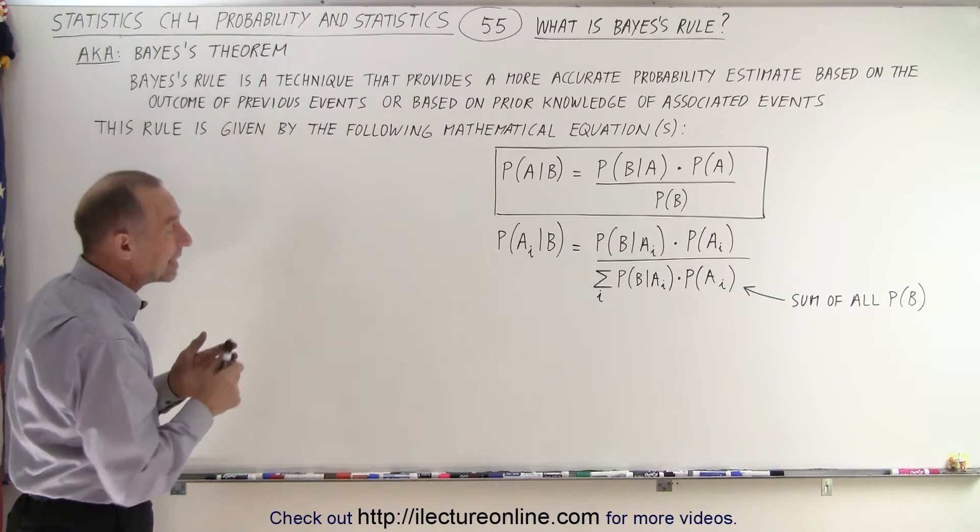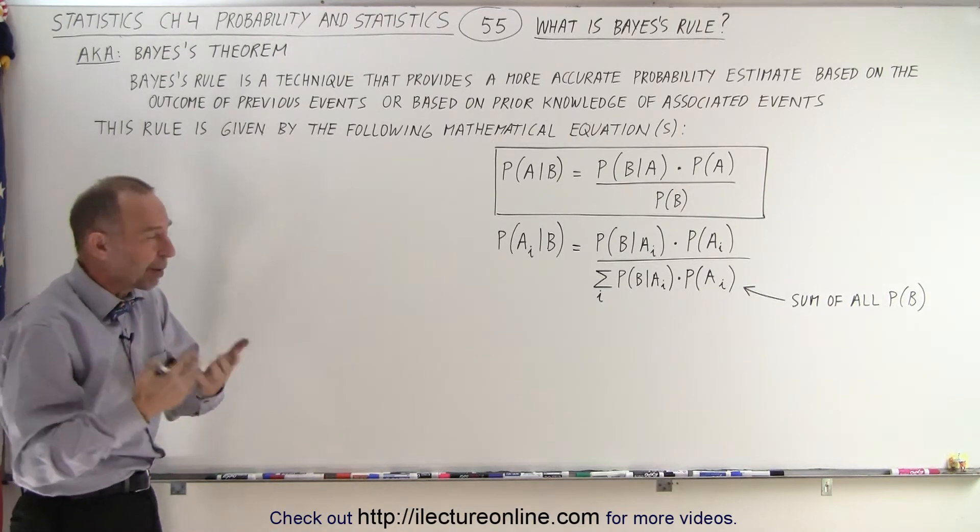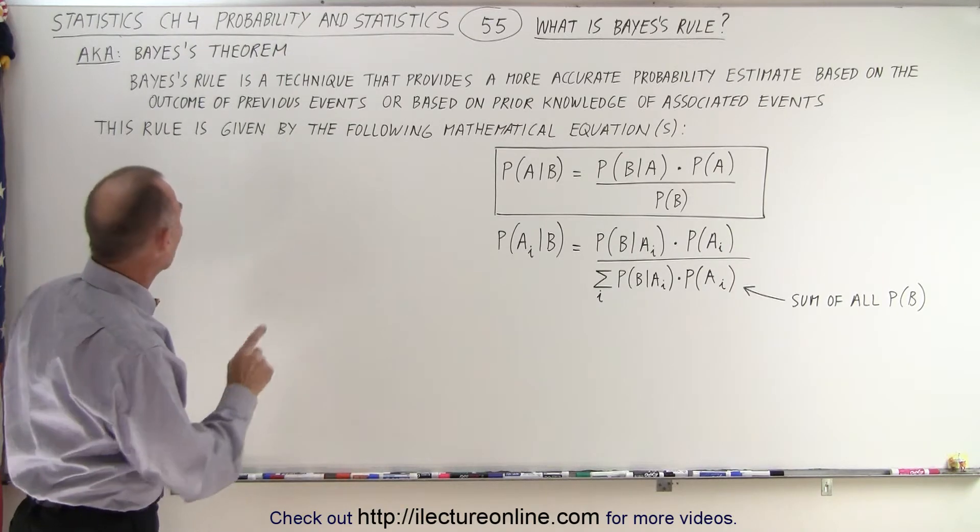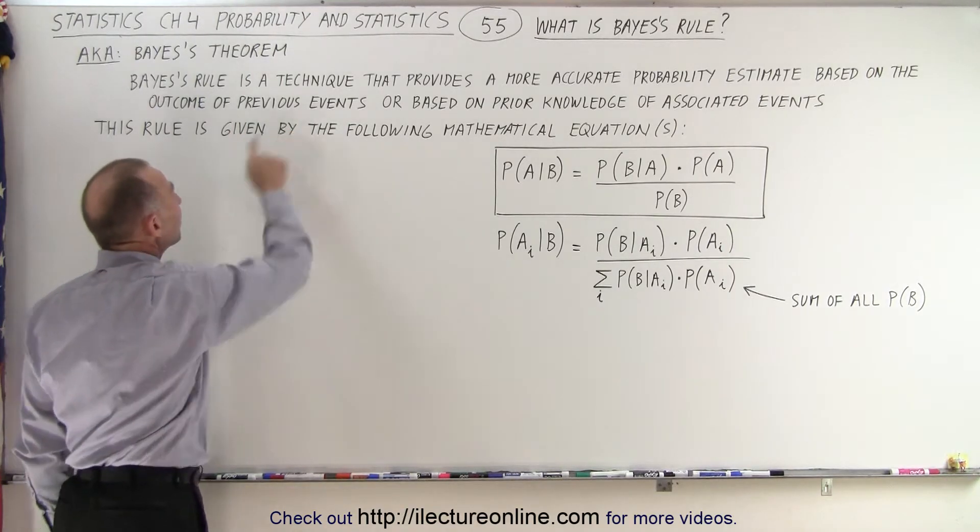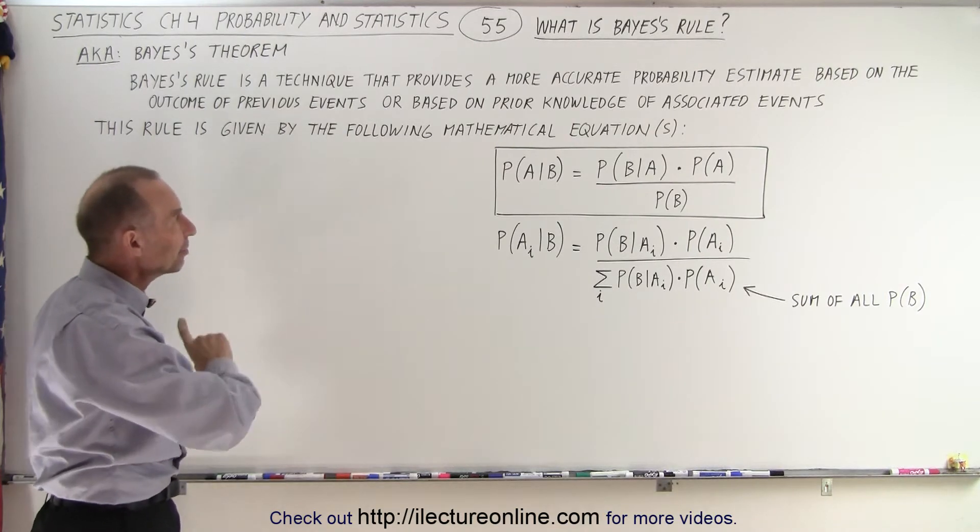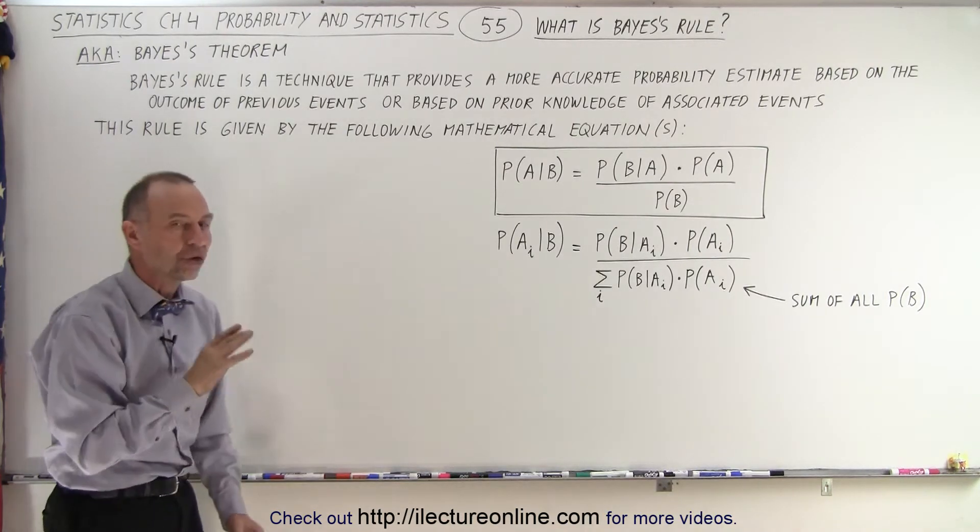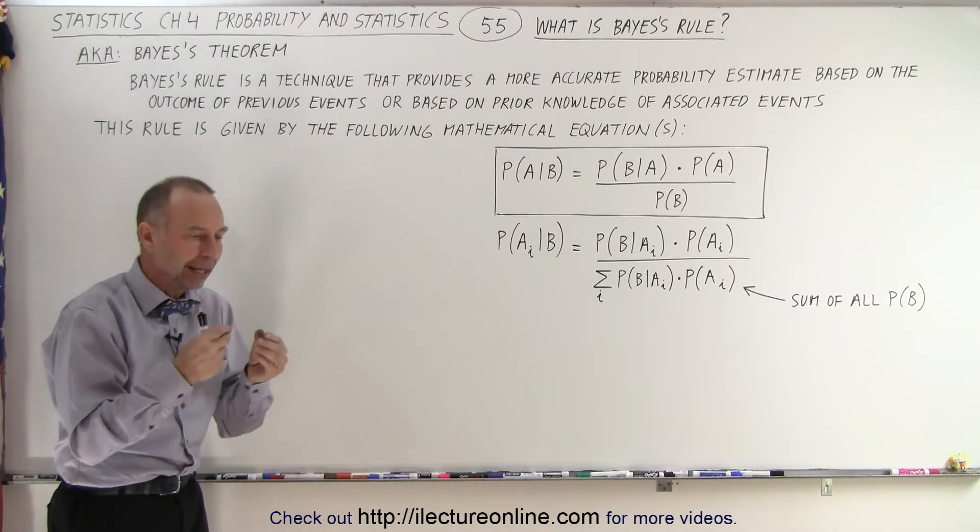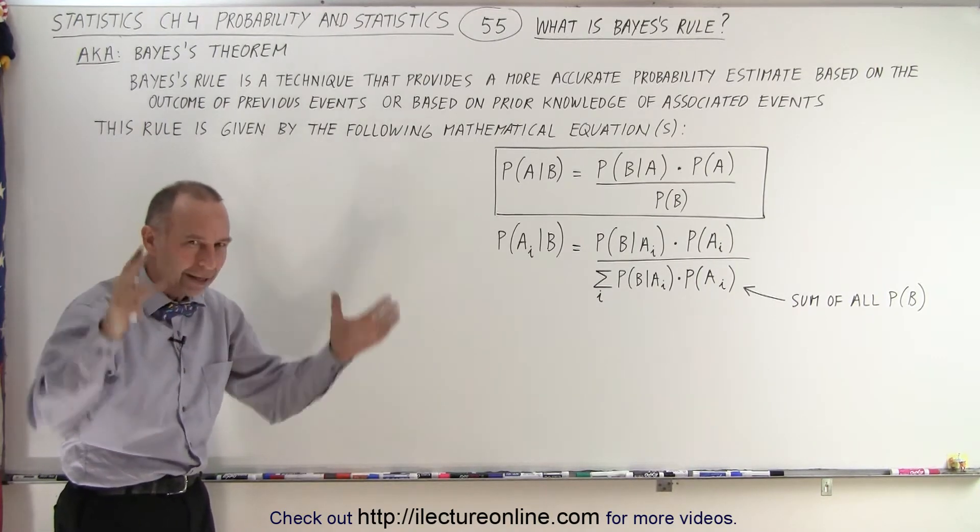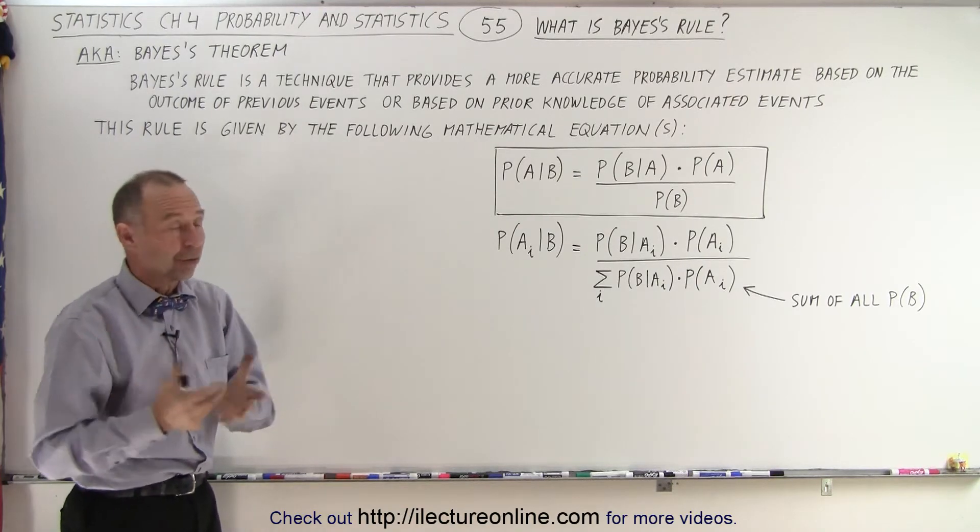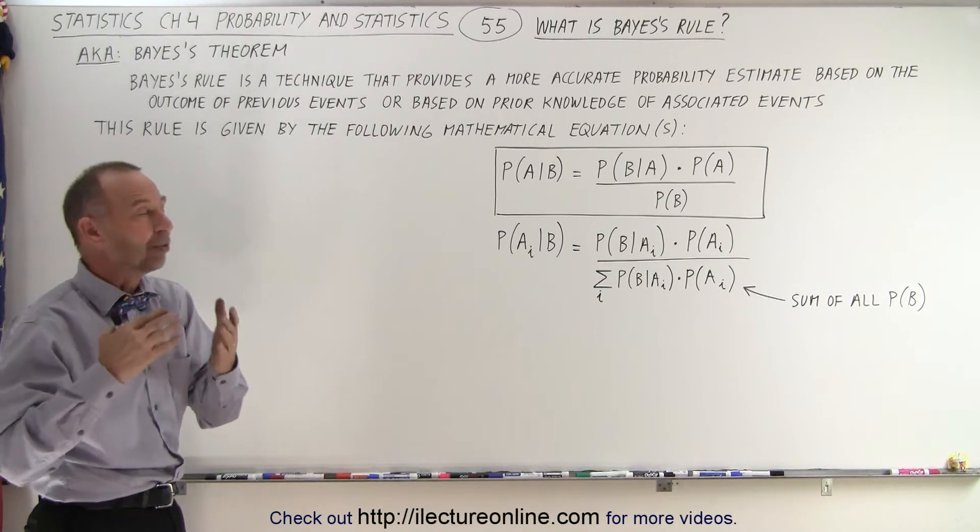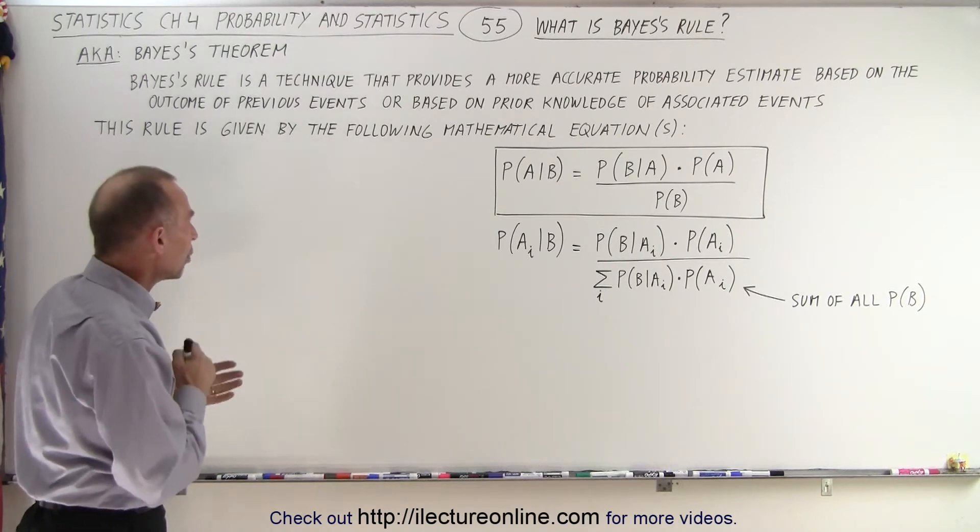Bayes' rule is a technique trying to find the probability of something, but that will provide a more accurate probability estimate based on the outcome of previous events or based on prior knowledge of associated events. So depending upon what's happened before and some prior knowledge put into the calculation for finding the probability, we have a new technique now called Bayes' rule to find that probability more accurately.